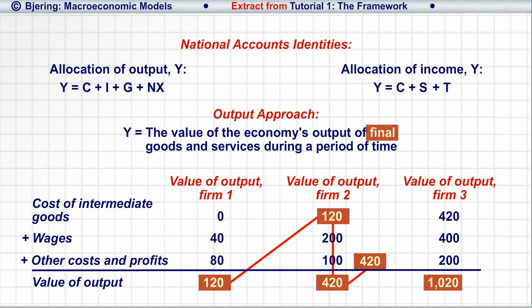Adding the values to get the total value of output of this three-firm economy, you triple count firm number one's output of 120 and double count the output of firm number two of 420.